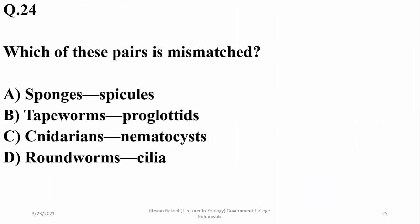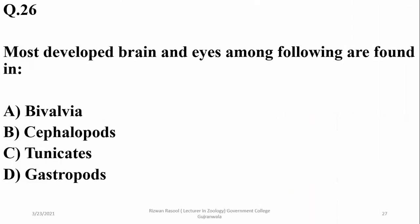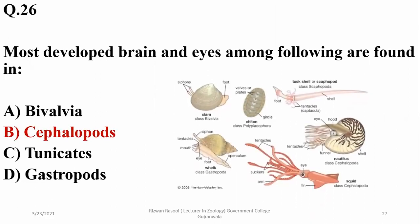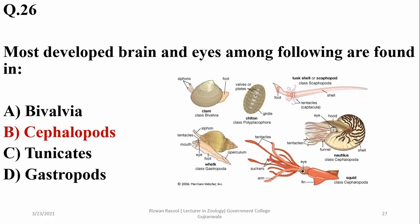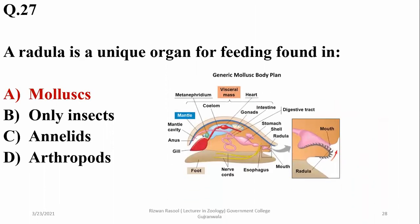Question eighteen: the mismatched pair is roundworms and cilia — the other pairs are exactly matching. Question nineteen: the most developed brain and eyes among invertebrates are found in cephalopods. The radula is a unique feeding organ — a rasping tongue-like structure — found in class Gastropoda of Mollusca, such as snails and slugs.